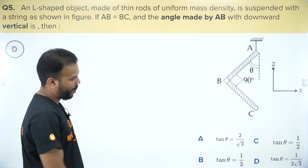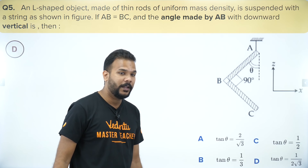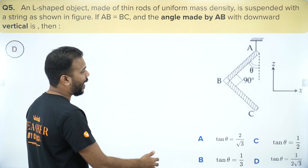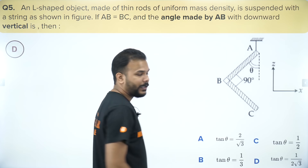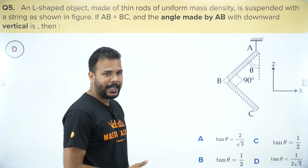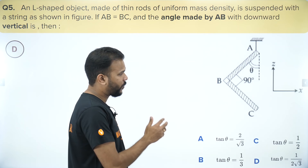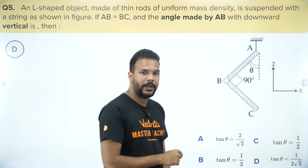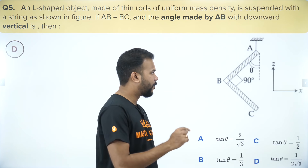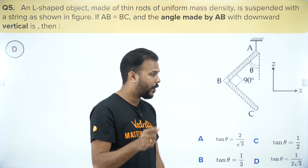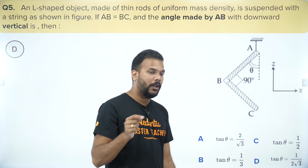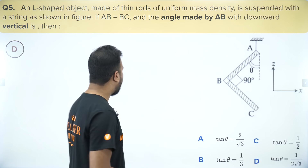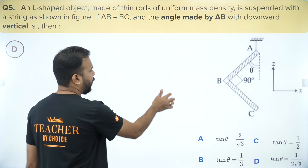Next question is from center of mass and collision — we need to find what angle AB makes with theta. Looking at the diagram, some balancing must happen — net torque becomes zero and the center of mass position needs to be found with geometric understanding. That will require a lot of thinking and take time, so marking it as difficult.